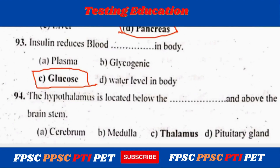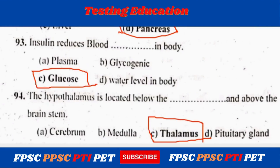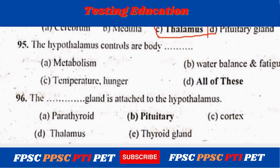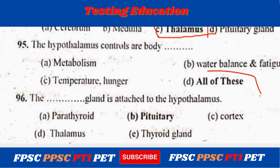The hypothalamus is located below the thalamus and above the brain stem. The hypothalamus controls our body metabolism, water balance, fatigue, temperature, and hunger — all of these. The pituitary gland is attached to the hypothalamus. Another name for the pituitary gland is the master gland.